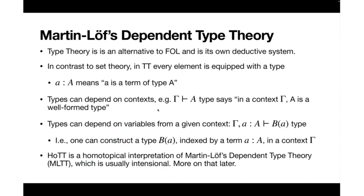Homotopy type theory is based on Martin-Löf's idea of dependent type theory, which is an alternative to first-order logic. In contrast to set theory, in type theory every element is uniquely equipped with a type. We have an expression a : A (small a, capital A), which means that a is a term of type A.